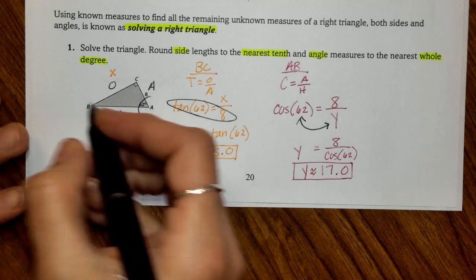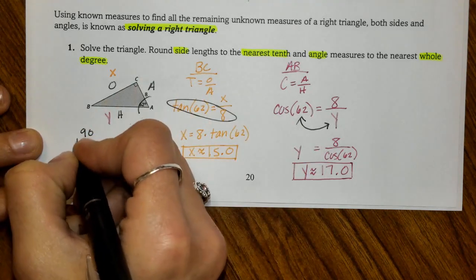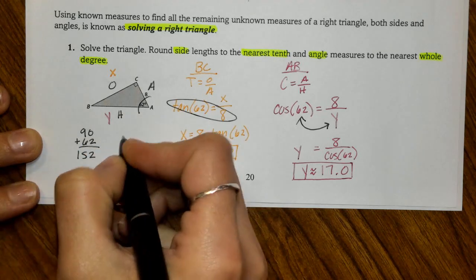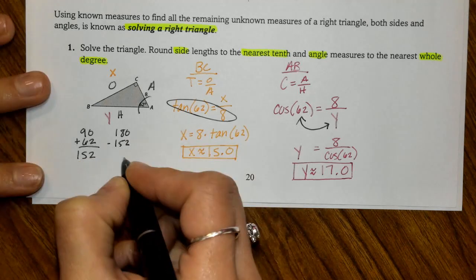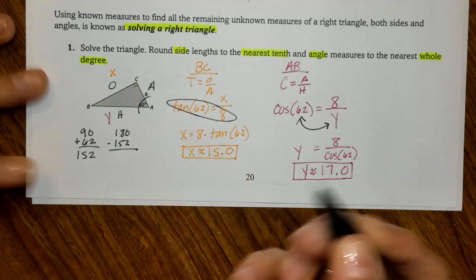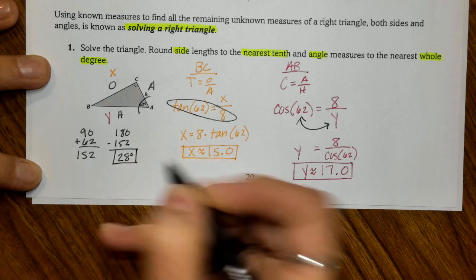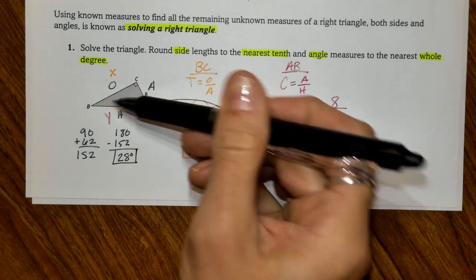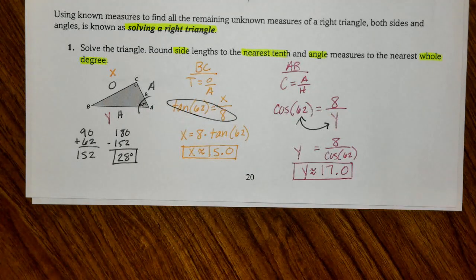To find angle B, we add the two angles we have: 90 plus 62 gives 152, then we subtract 152 from 180 and get 28 degrees. The shortcut is also: in a right triangle the two acute angles add up to 90, so you could have just subtracted 62 from 90 to get your answer as well.